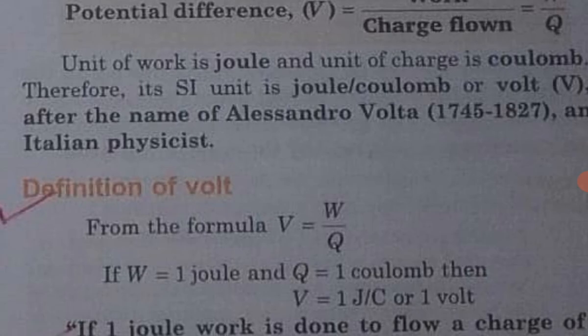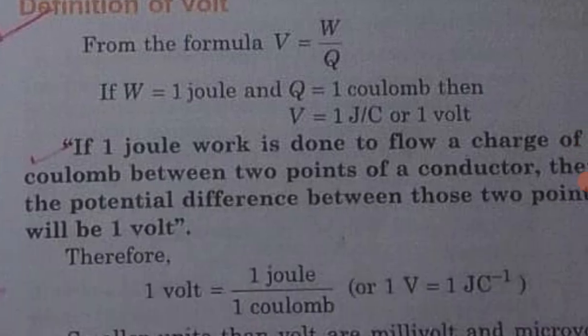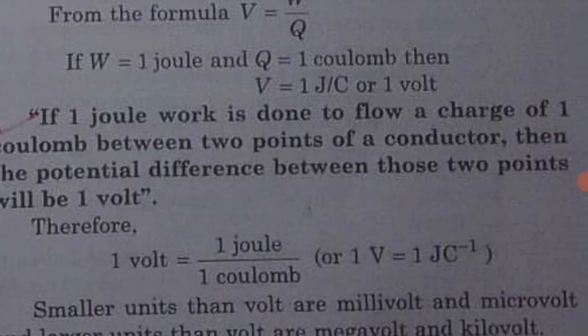Definition of the volt: If one joule of work is done to flow a charge of one coulomb between two points of a conductor, then the potential difference between these two points will be one volt.